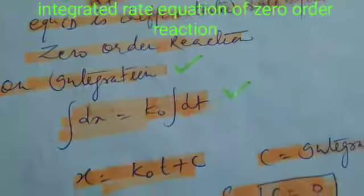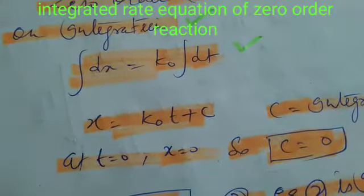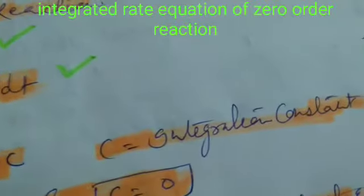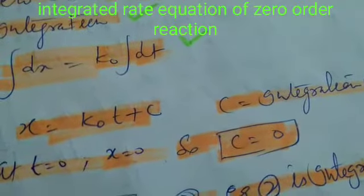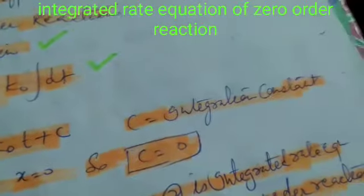Integrating dX equal to K0 dT, we get X equal to K0 T plus C, where C is the integration constant. Now we want to determine the value of integration constant C.